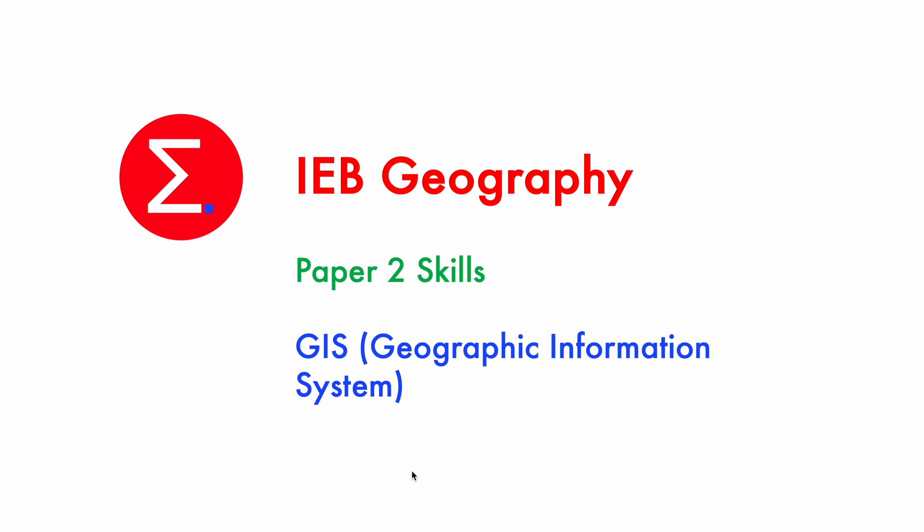Hi everyone and welcome back to another Excel Academy YouTube video. Today we're going to be looking at GIS, which stands for Geographic Information System, and this is an important skill that is assessed in IB Geography Paper 2.